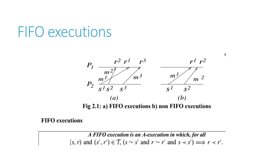In FIFO execution, whatever order the messages arrive, they are processed in that same received order. In non-FIFO execution, it doesn't matter which order messages arrive — what matters is the sender's original sending order. From the sender's point of view, the same order in which they were sent is the order I try to execute them. Technically, a FIFO execution is an asynchronous execution in which for all sent events S and receive events R, and corresponding S-prime and R-prime belonging to timestamp T.